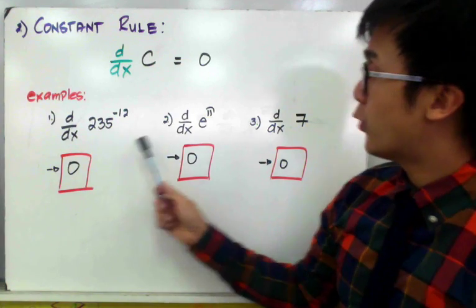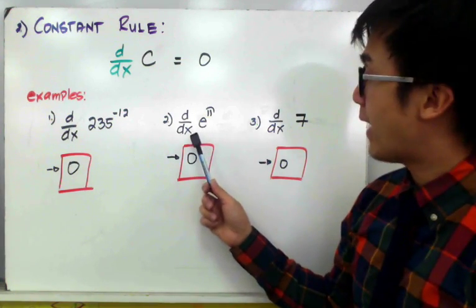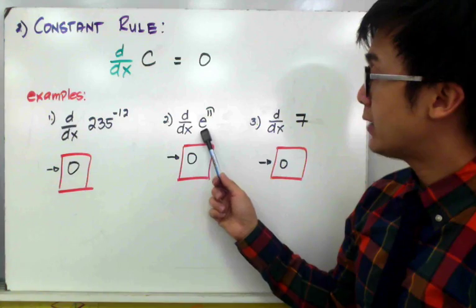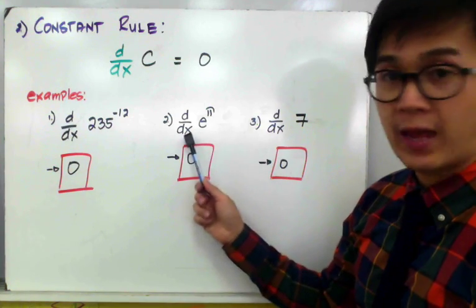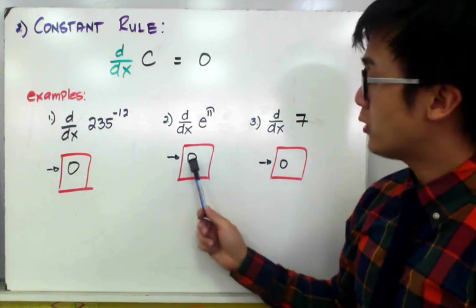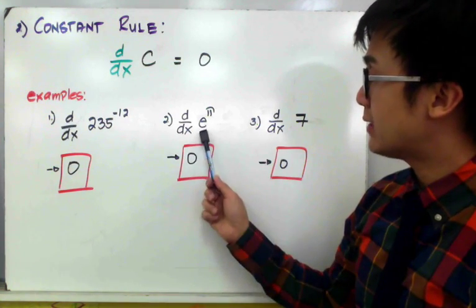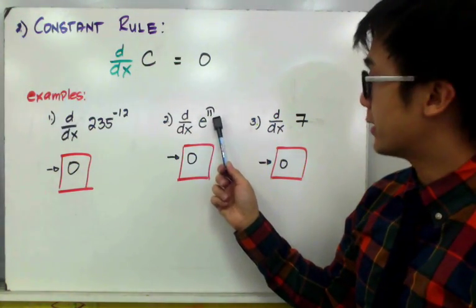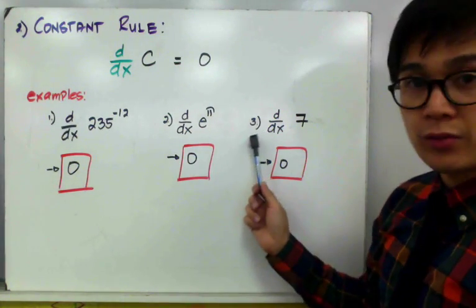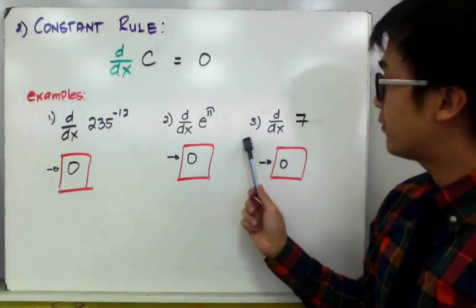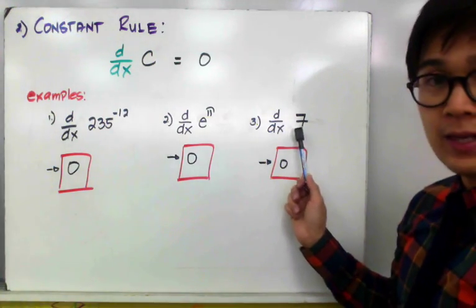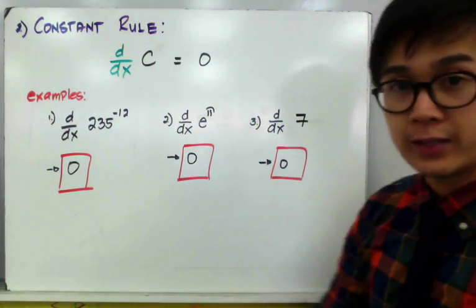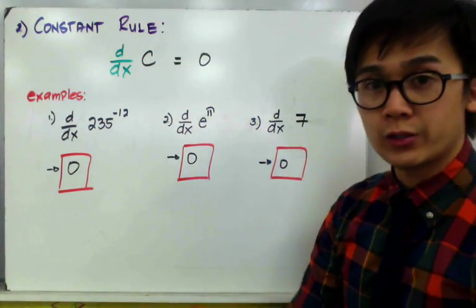For example number 2, if we have to find the derivative of e raised to pi in terms of x, it's also equal to 0 because e is a constant and pi is also a constant. And for example number 3, the derivative of 7 is equal to 0 because 7 is also a constant.